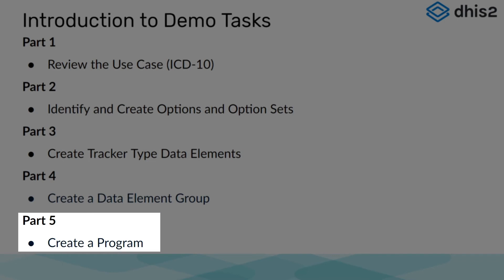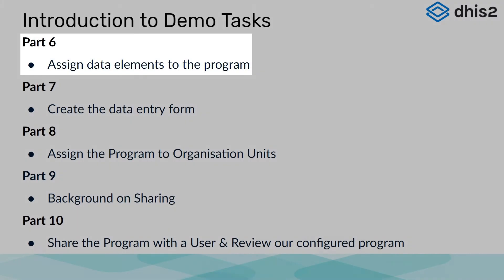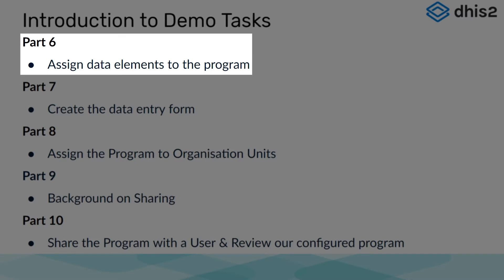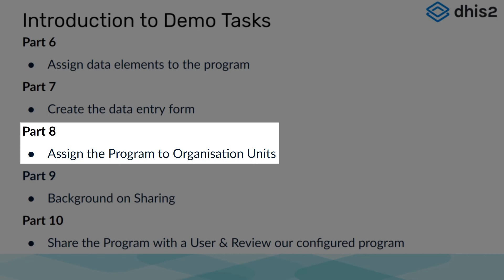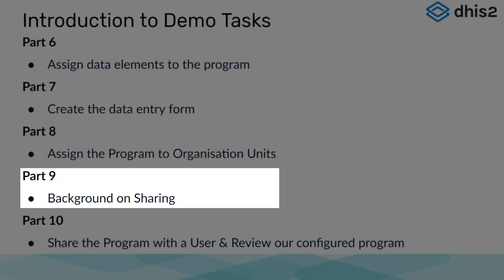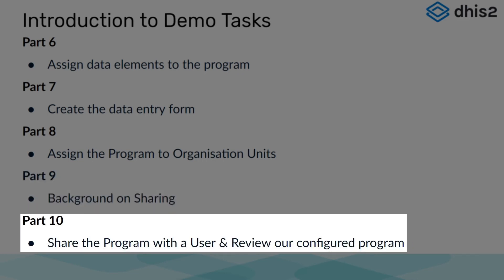Parts 5 through 10 all involve the creation of the program. In Part 5, we will start by creating the actual program. In Part 6, we will take the data elements we have made and assign them to our program. In Part 7, we will take the data elements we have assigned to the program and make a data entry form using those data elements. In Part 8, we will assign the program to organization units. In Part 9, we will provide some background on sharing. And lastly, in Part 10, we will apply the sharing settings to our program and finally review the completed program we have created.